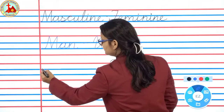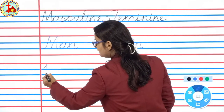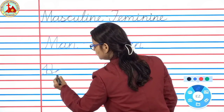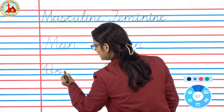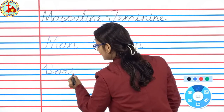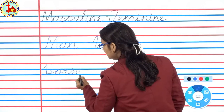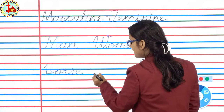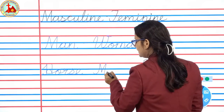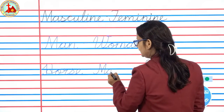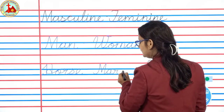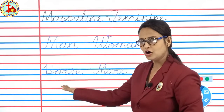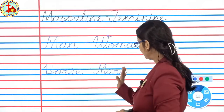Next word is horse. H-O-R-S-E. Horse. And feminine: M-A-R-E. Mare. Horse, mare.